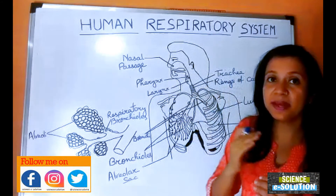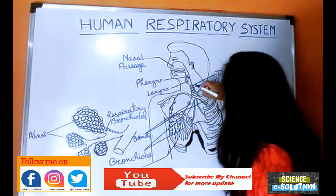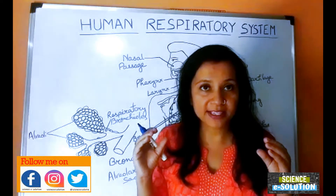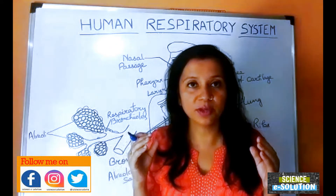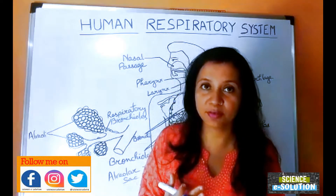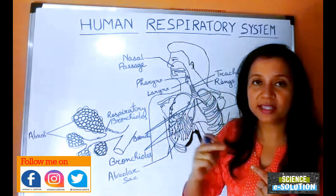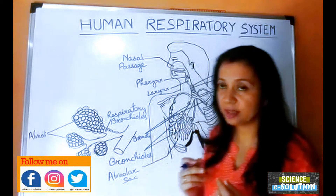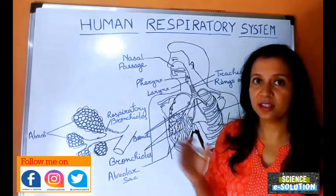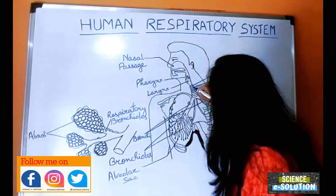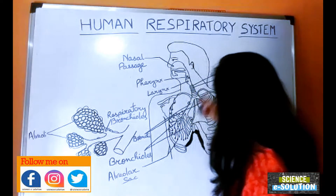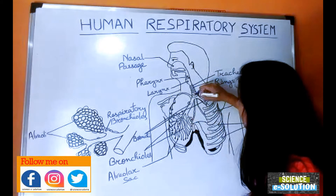From the larynx, air moves into the trachea, also known as the windpipe. The trachea contains many rings of cartilage — you can see here it has a pipe-like structure through which air moves. The trachea could collapse at any time, and if it did we would suffocate and die. So the rings of cartilage, made of cartilaginous material, wrap the trachea tightly to protect it from collapsing.